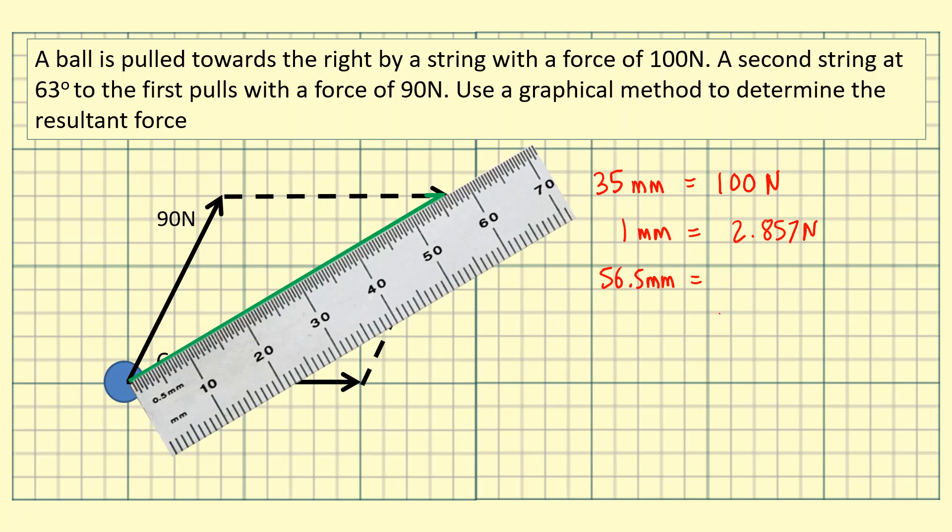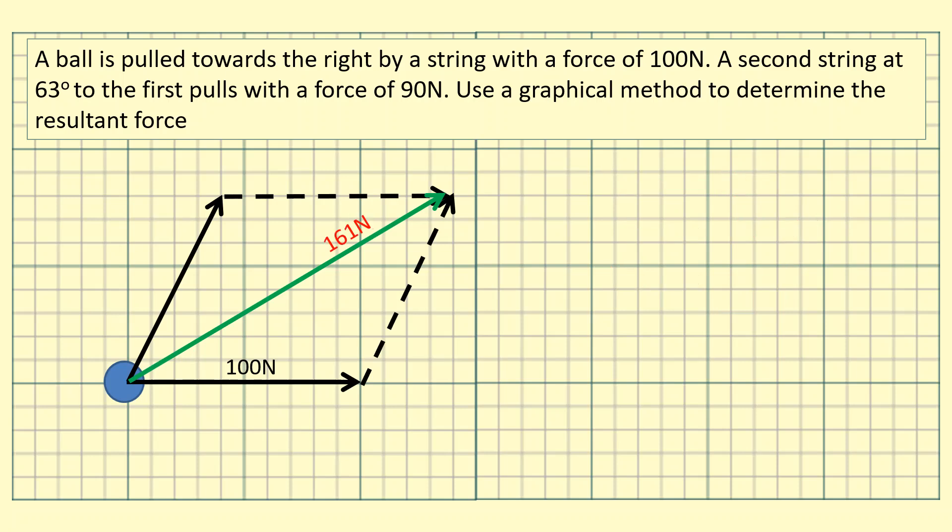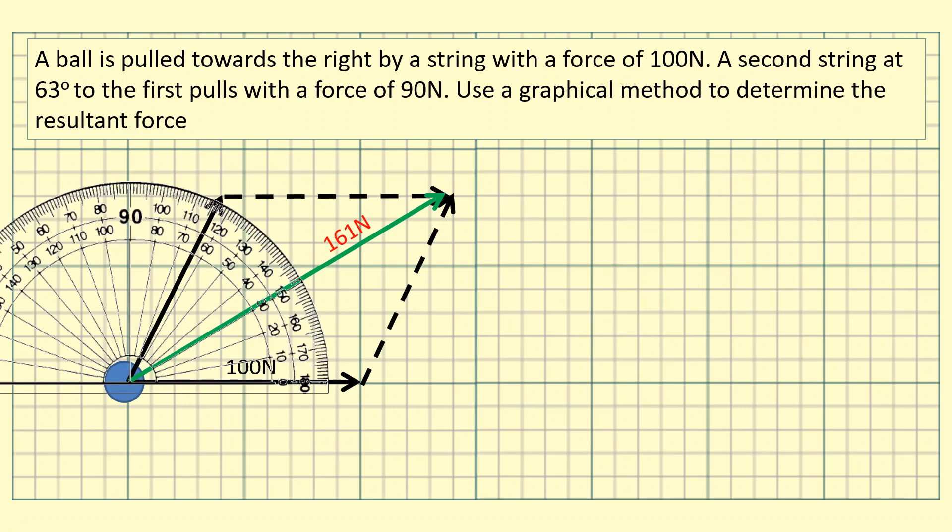So if I multiply 56.5 by 2.857 I will get 161 Newtons. So this is 161 Newtons as the magnitude. To get the direction you simply use a protractor and measure the angle. So in this case it's roughly 31 degrees from the 100 Newton force.